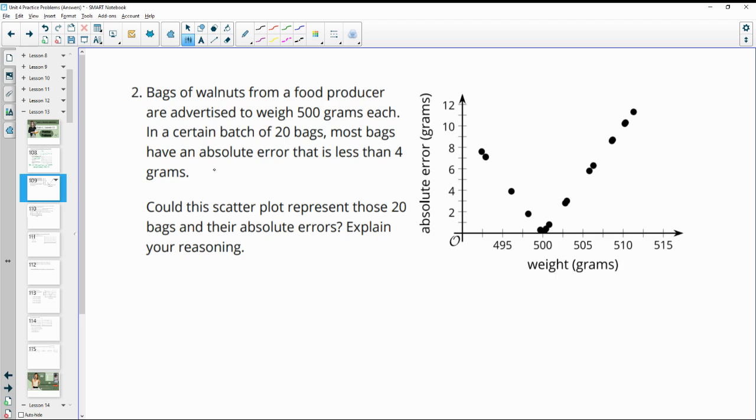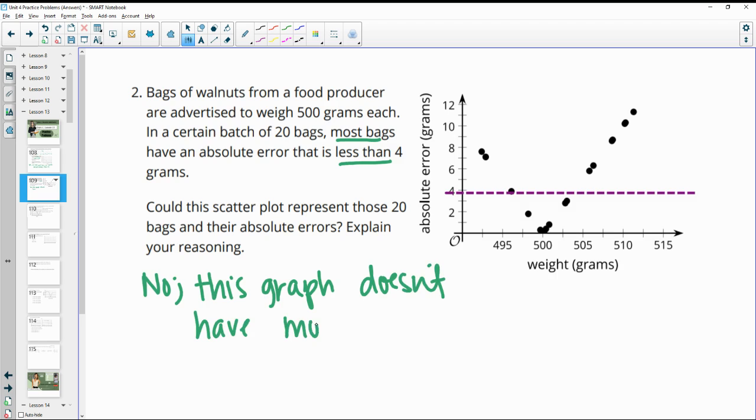This is saying that most of the bags are less than 4 error. So if we take a look at where 4 is, 4 is here, and that doesn't show us most points being below 4. So I would say no, this graph doesn't have most of its points below 4.